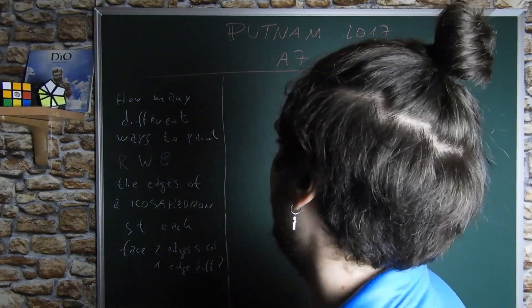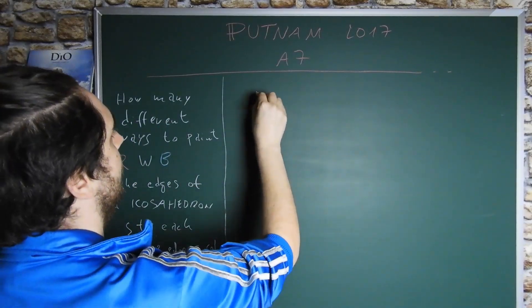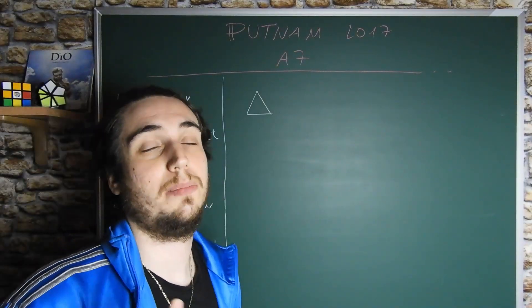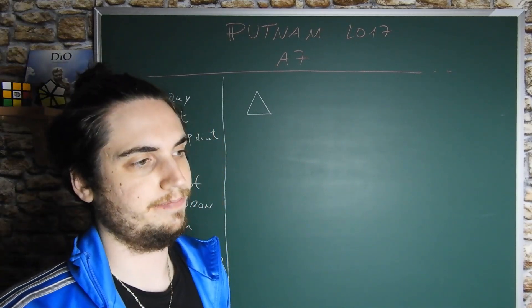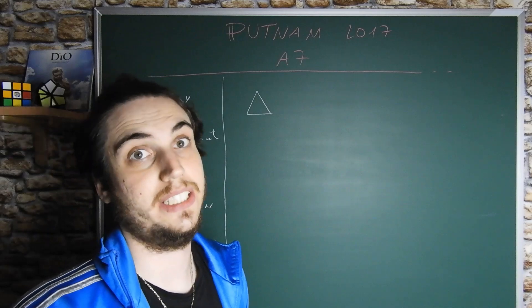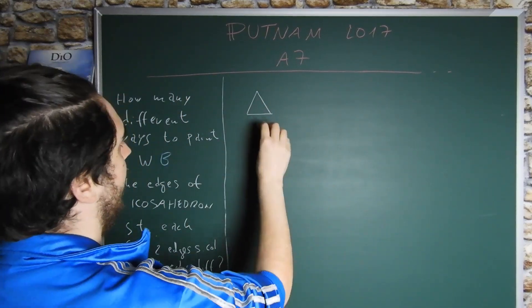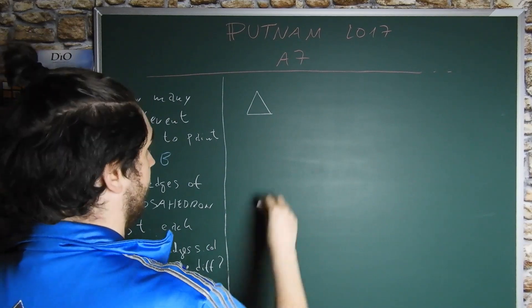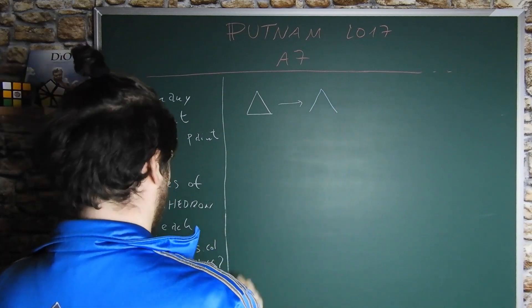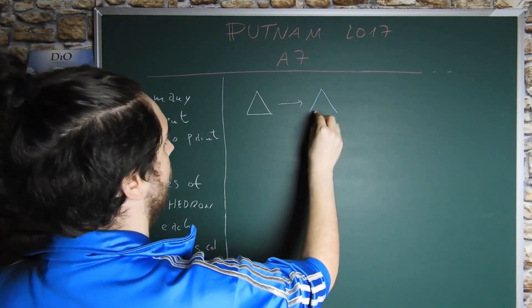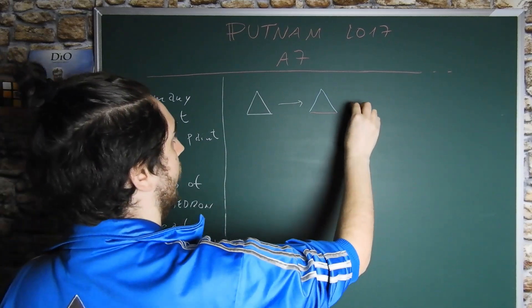So for a face, an icosahedron is a regular polyhedra with 30 edges and 20 faces. If a face is like this, we can color it, for example, in this way: two edges of the same color and a third edge of a different color. So this is right.